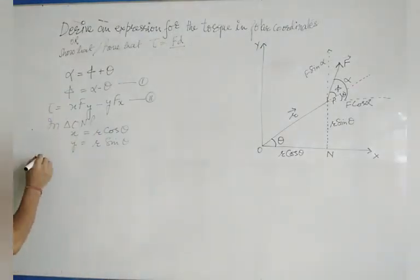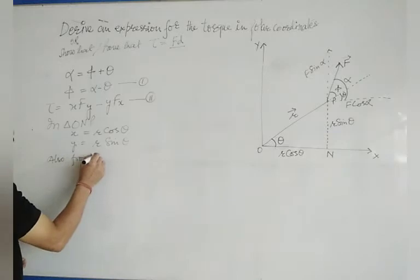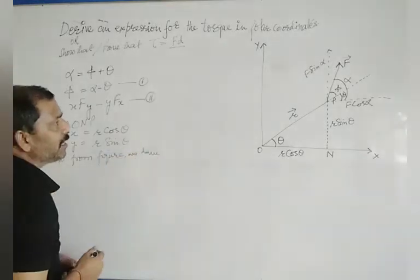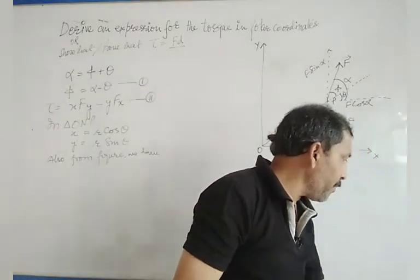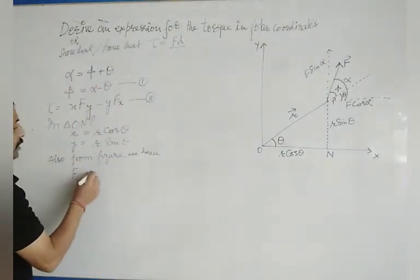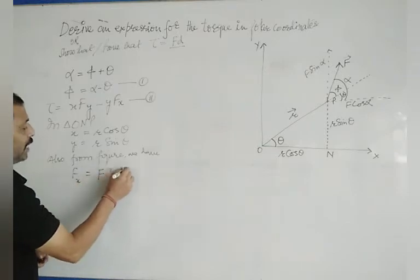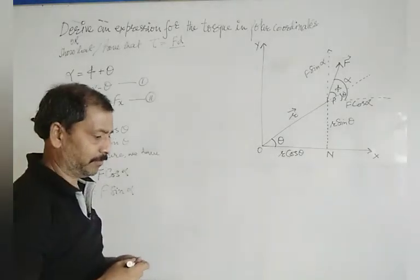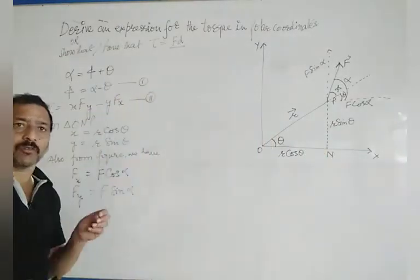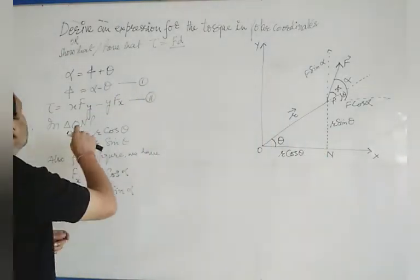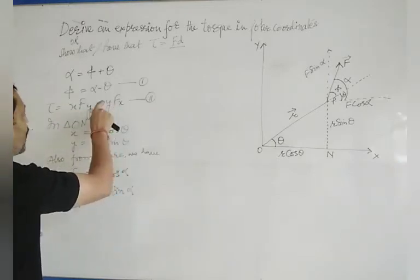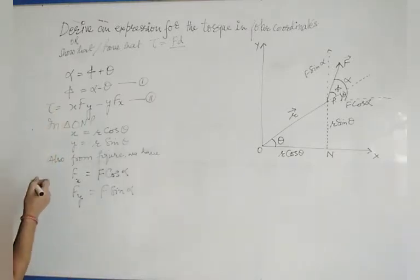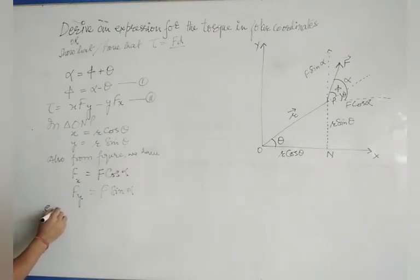And so from the figure we have these values. And so this equation of the torque in Cartesian coordinates can be written in terms of x, y, Fx and Fy. If we put all four values in this equation, let's see what we get. So therefore equation 2 becomes...